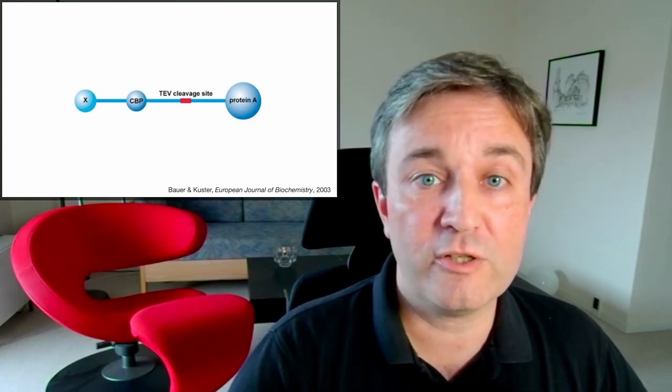Here you have a construct where the protein X, the bait, is fused to both a calmodulin binding protein, a TEV cleavage site, and protein A. This allows you to first do a pull down with an antibody against protein A, then cleave off the construct, do a secondary pull down using calmodulin, and then another washing step. This gives you very clean pull downs that allow you to then do mass spectrometry and identify co-complex interactions.